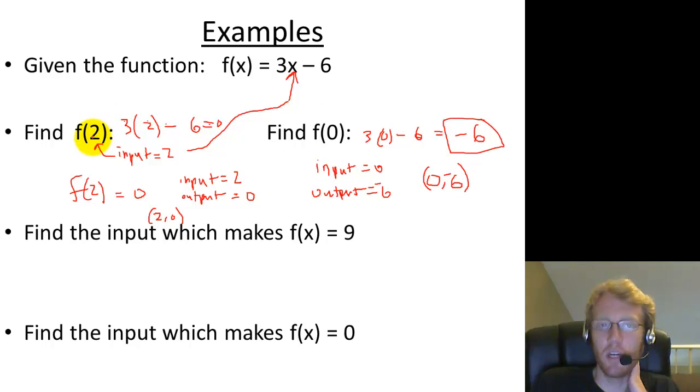So you can see that if you know the input, either a 2 or a 0, you plug the input in for x, and you get the output.